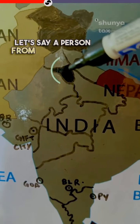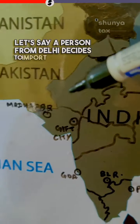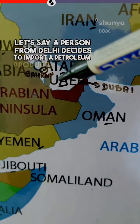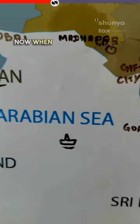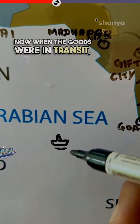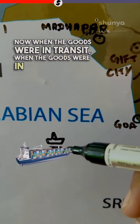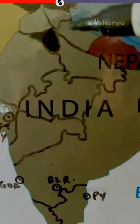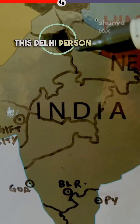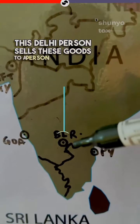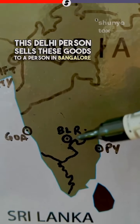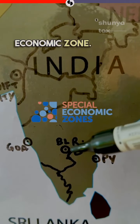Let's say a person from Delhi decides to import a petroleum product from UAE. Now when the goods were in transit, when the goods were in the high sea, this Delhi person sells these goods to a person in Bangalore who is in a Special Economic Zone.